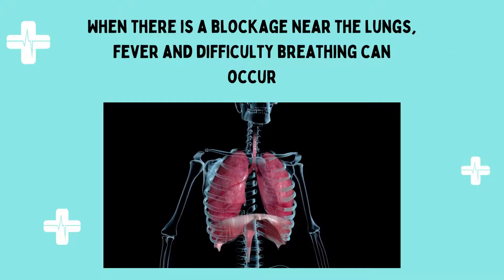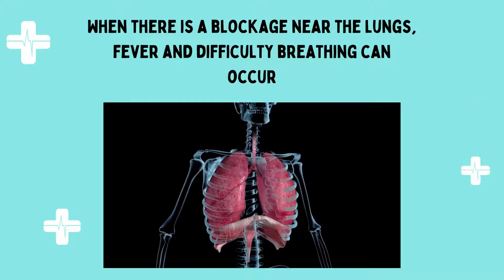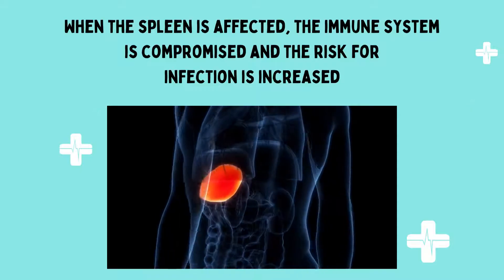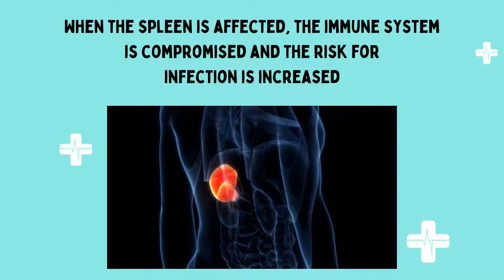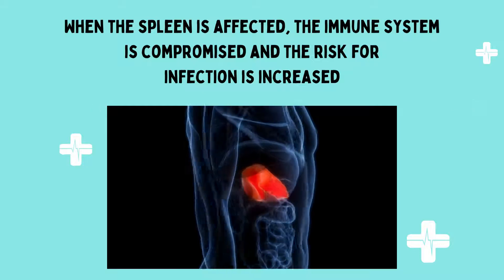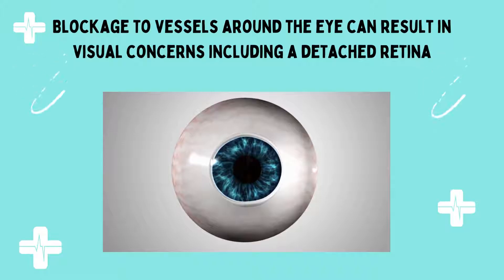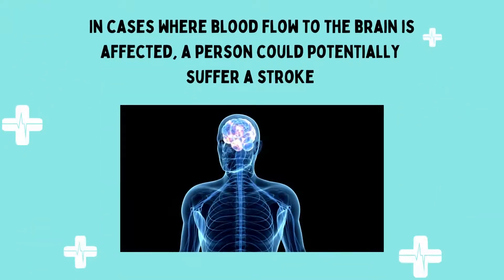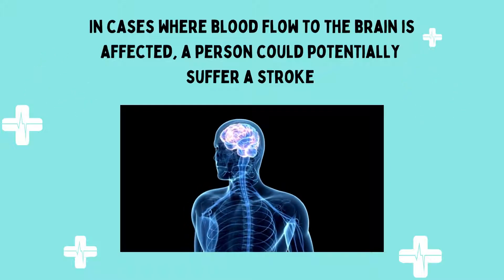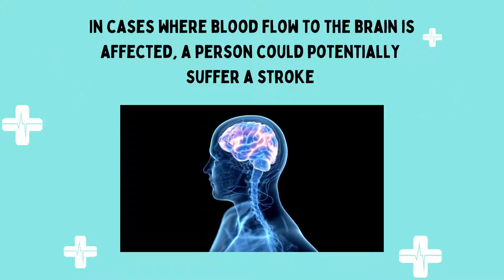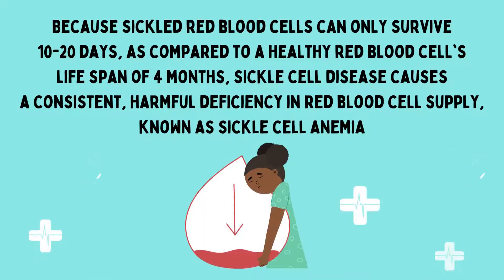When the spleen is affected, the immune system is compromised, increasing the risk for infection. Blockage to vessels around the eye can lead to visual disturbances, including a detached retina. In cases where blood flow to the brain is affected, a person can potentially suffer a stroke.